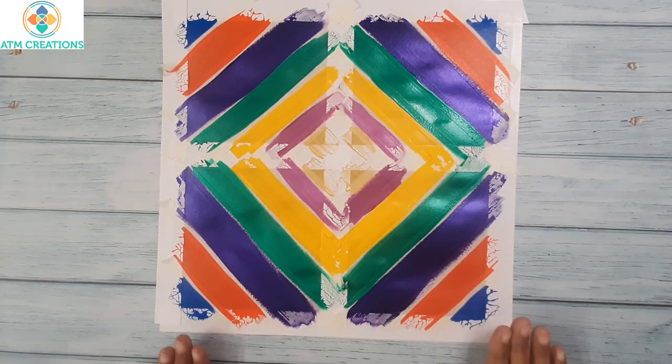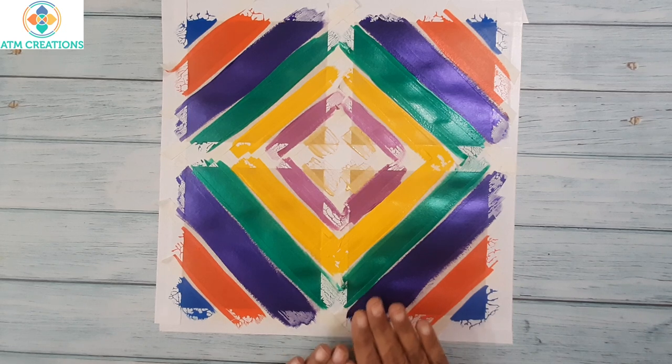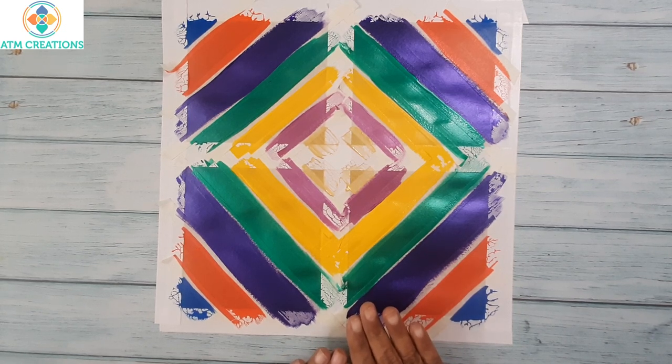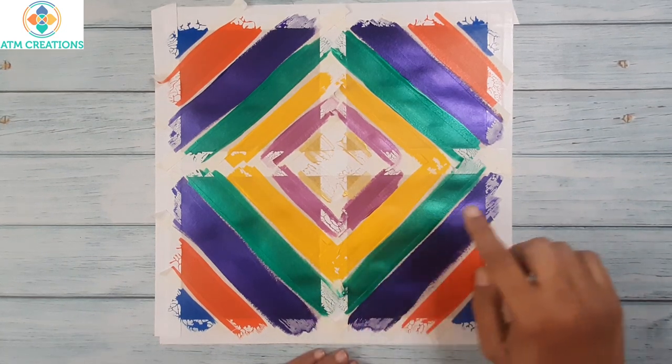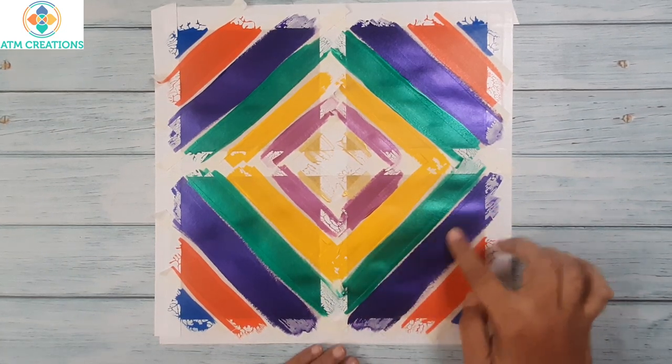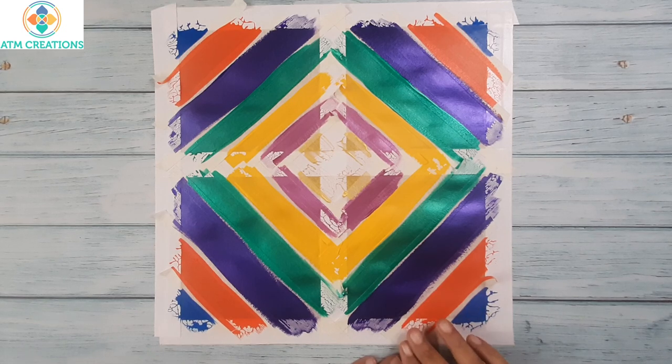The painting is now over, but we have to let this dry at least for 30 to 45 minutes, and then slowly remove the masking tape. The painting is dry for quite some time now. Now let us slowly remove the masking tape.